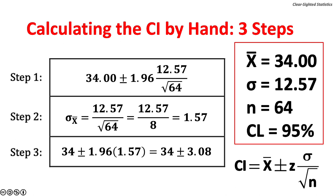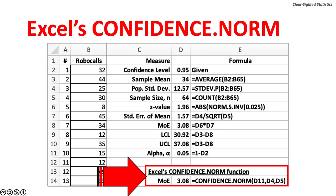Step three: multiply the critical value for Z, 1.96, by the standard error of the mean, 1.57, to get the margin of error of 3.08. The 95% confidence interval is 34 spam calls a month, plus or minus 3.08 spam calls. Microsoft Excel can also calculate this using its CONFIDENCE.NORM function. The function has three arguments: the significance level (0.05 for a 95% confidence level), the population standard deviation (12.57), and the sample size (64). The margin of error is 3.08, the same as the hand calculation.